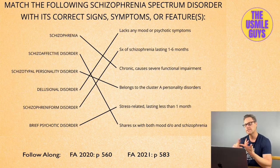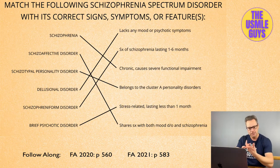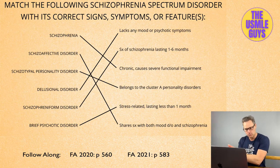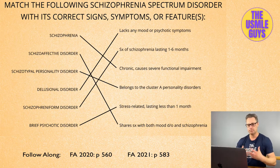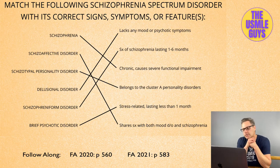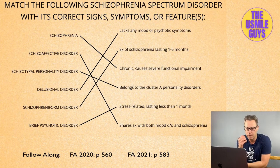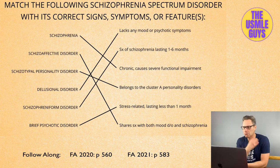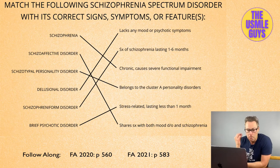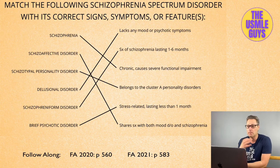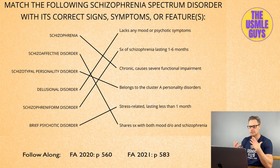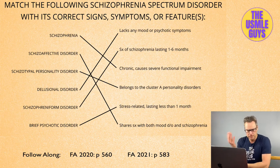Schizophrenia is characterized by positive symptoms — things added onto your person, like hallucinations and delusions. Negative symptoms are also present — things taken away: flat affect, anhedonia (inability to enjoy anything), and apathy. Cognitive impairment is also a main feature: inattention, memory deficits, and an inability to demonstrate executive planning — for example, struggling to make future plans at a higher level.